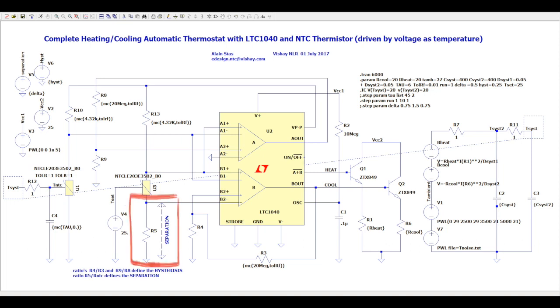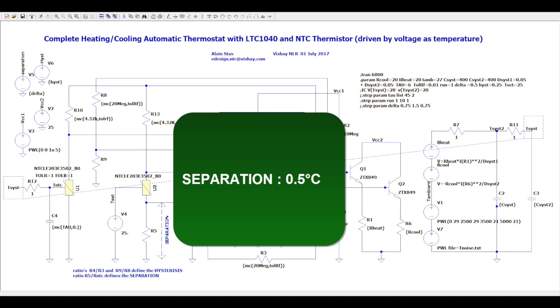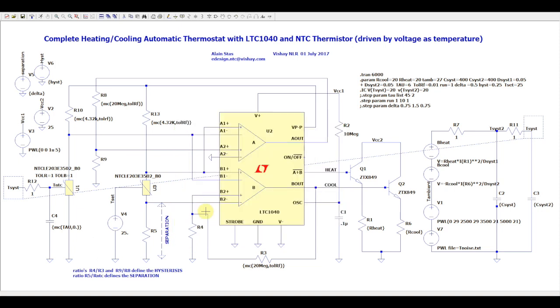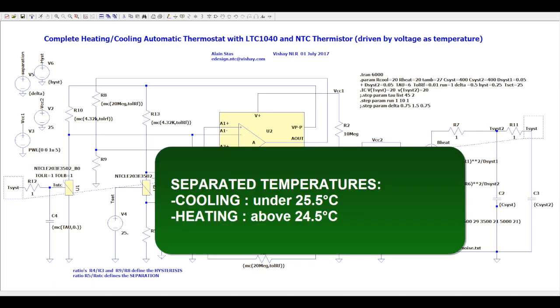There is first here a resistor which induces a separation zone between the cooling and the heating zones. If we tune this resistor to get a 0.5 degrees C separation, the LTC1040 will cool down to 25.5 degrees C and heat up to 24.5 degrees C.